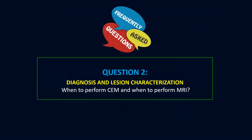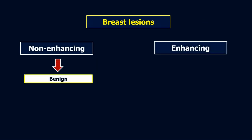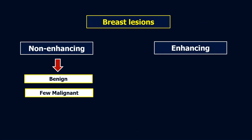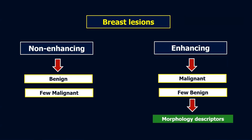Now we move to the second question: when to perform contrast mammography and when to perform MRI in lesion characterization. In general, we can classify lesions on contrast-based studies into either non-enhancing or enhancing lesions. Non-enhancing lesions are most probably benign, but a few malignant lesions do not exhibit enhancement, like low-grade DCIS, and sometimes the enhancement of lobular carcinoma is missed as if it is enhancing parenchyma. Enhancing lesions are mostly malignant, but we also have benign lesions which show contrast uptake.